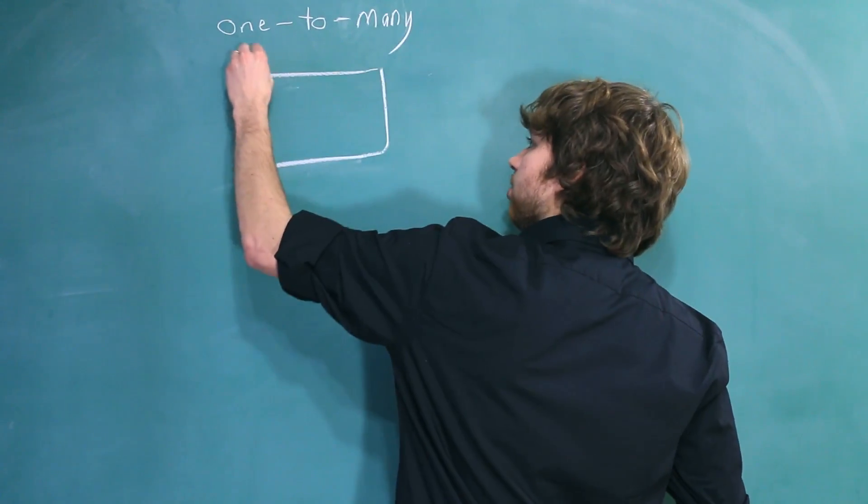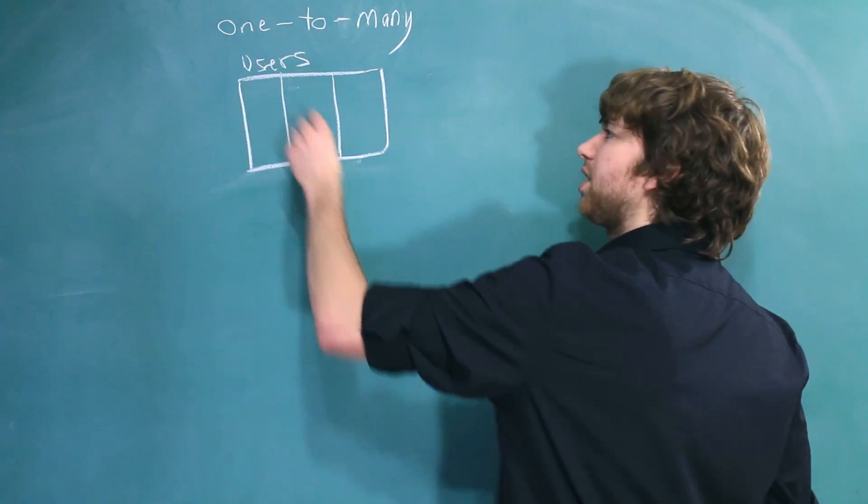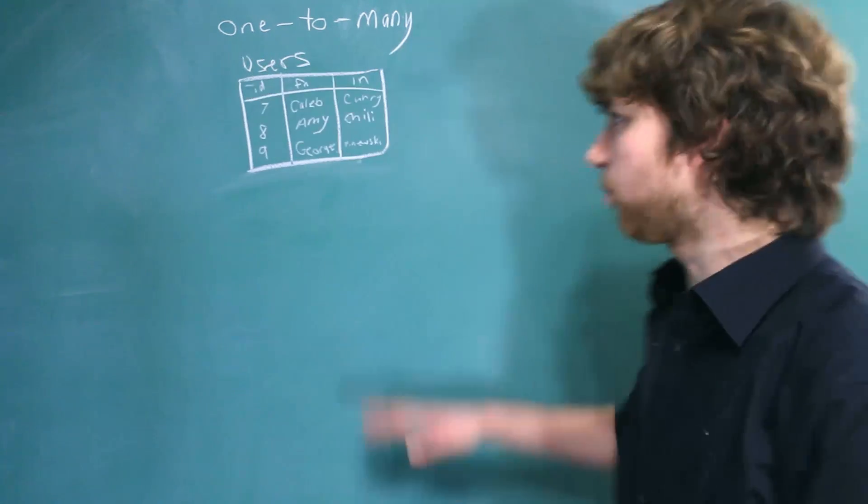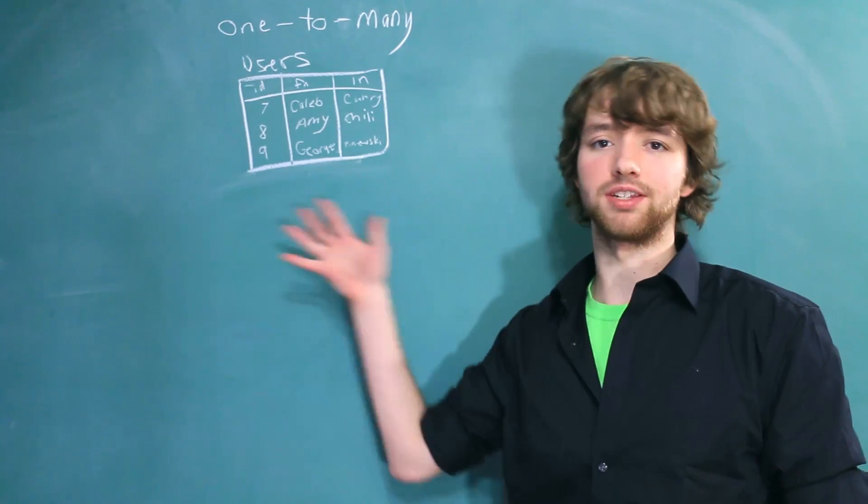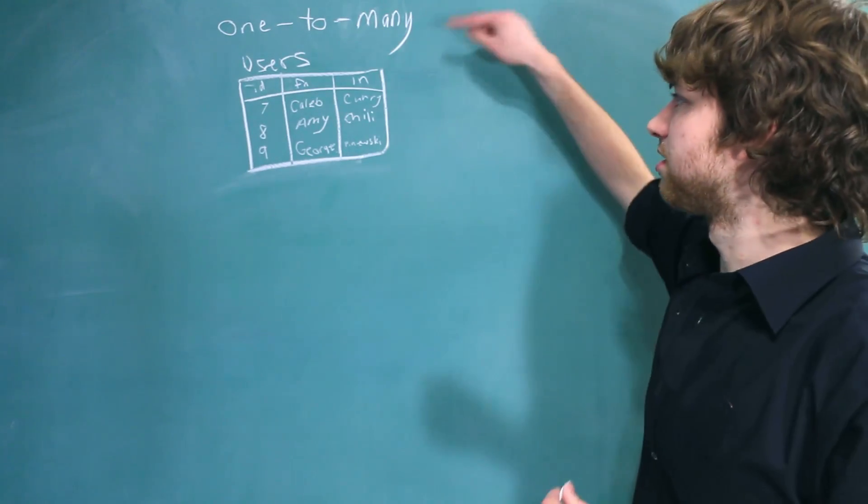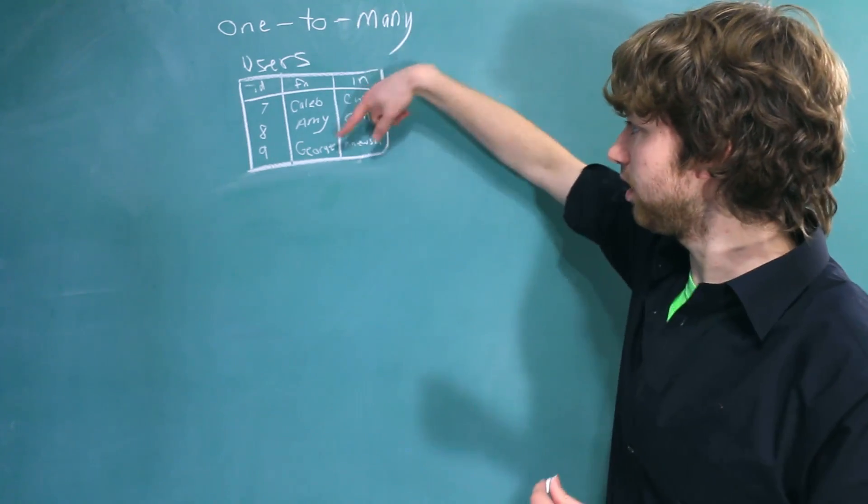Here we have the users table. We'll keep it simple. We'll just have ID, first name, and last name. Here we have a users table, and I've conveniently pre-inserted some data for us to use. So we have three people: Caleb, Amy, and George.